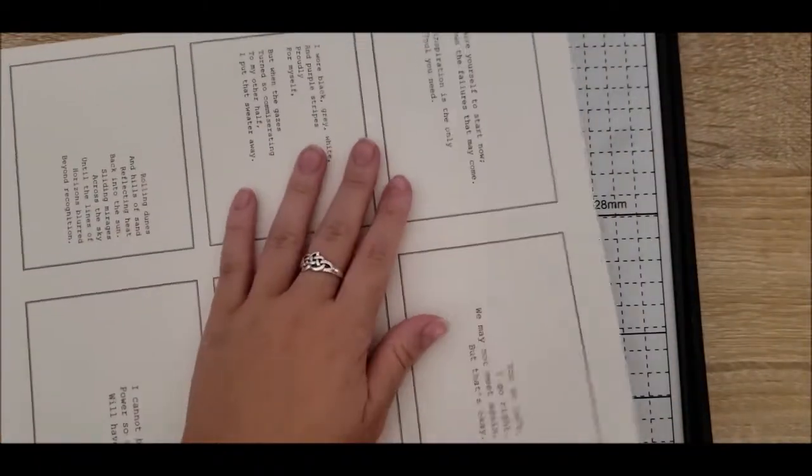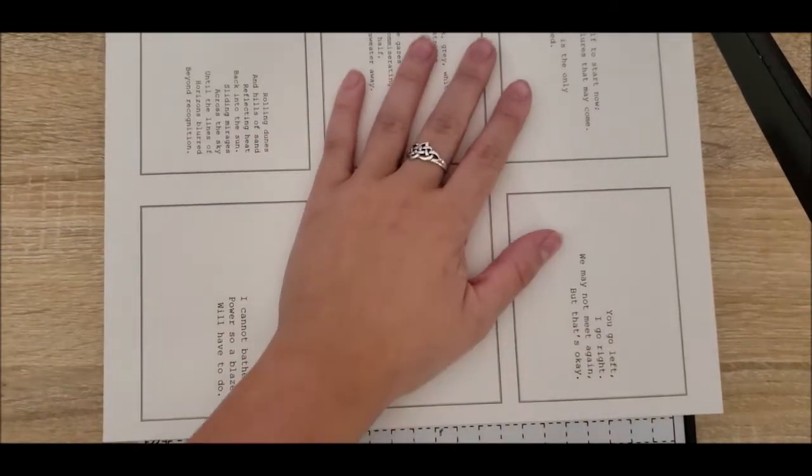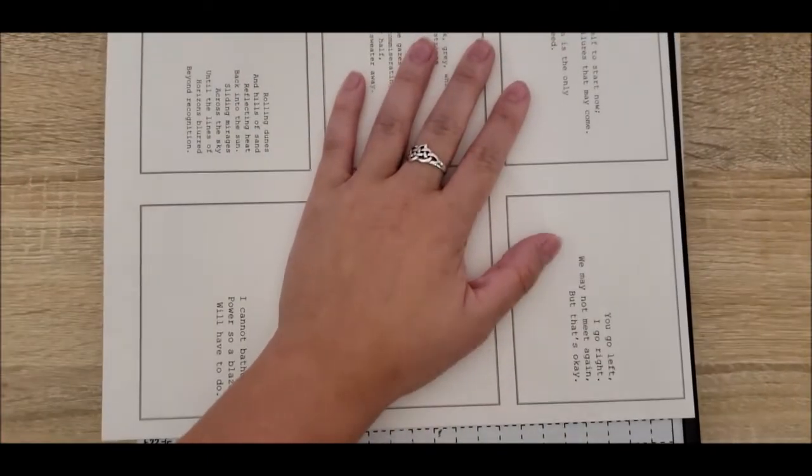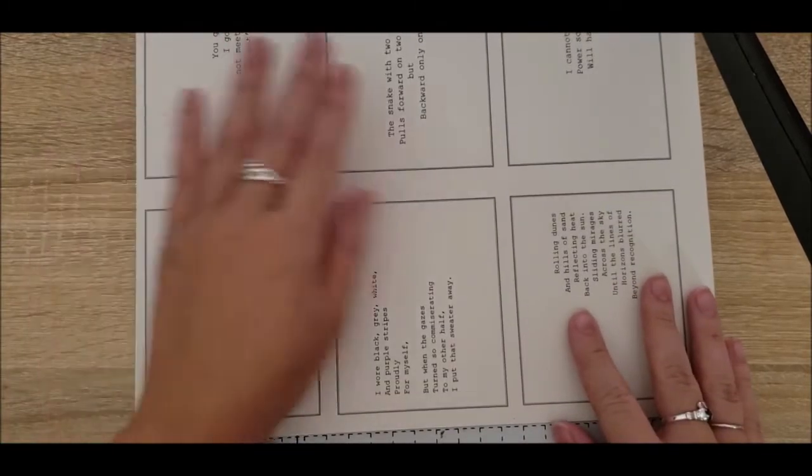In order to create these, I took some neutral colored paper, this is an off-white and I do have a bright white as well, so that I could add some variation. I went into Microsoft Word and I went into the template section.